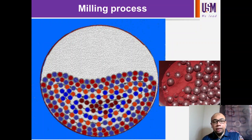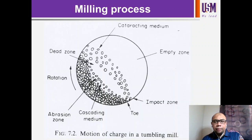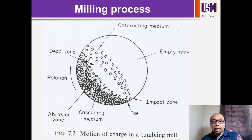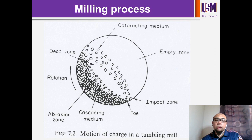Now, from the animation in the previous slide, I will show this as a schematic diagram. The diagram is titled 'The Motion of the Charge in the Tumbling Mill or Ball Mill Machine.' I will briefly explain how this milling process works inside the tumbler. You can see the arrow indicating that the tumbler or ball mill container rotates following a clockwise rotation.